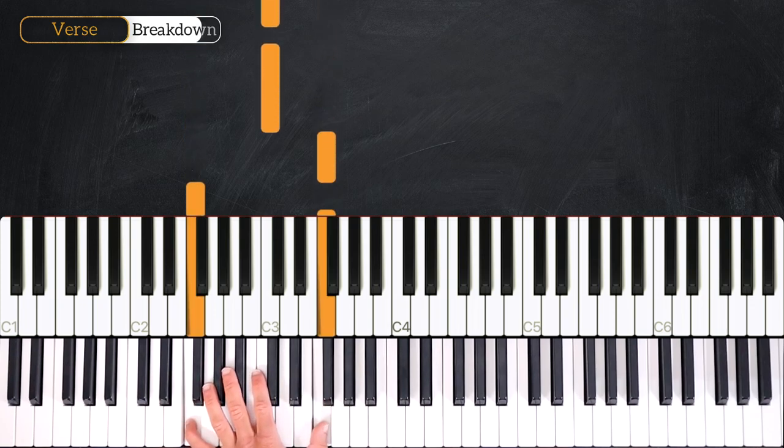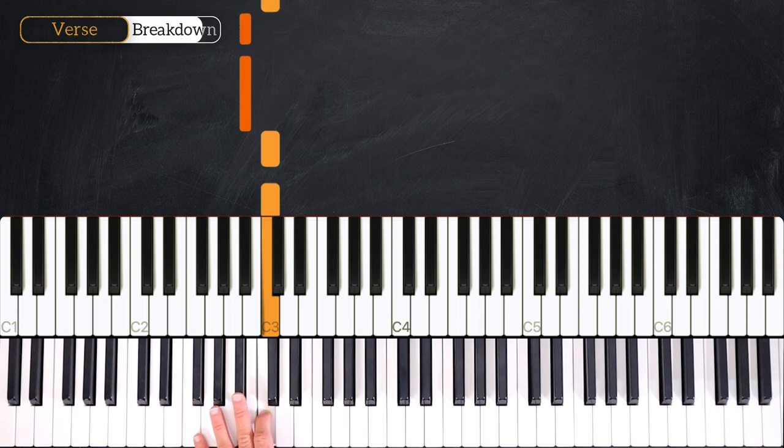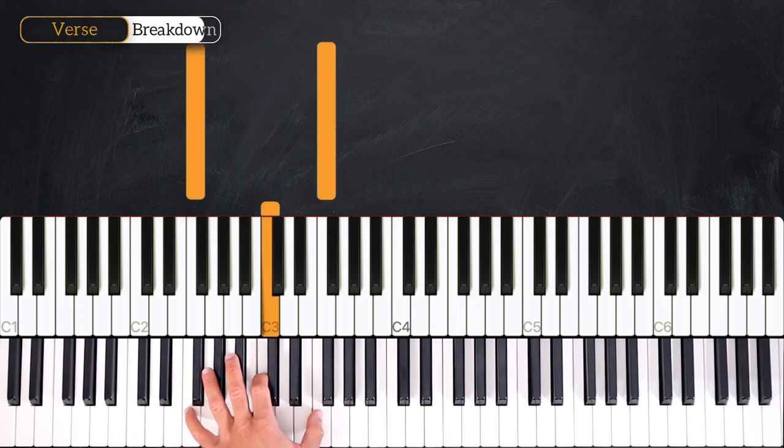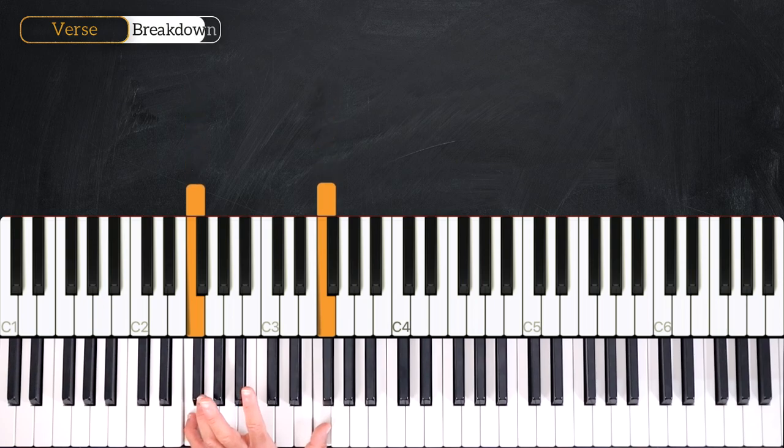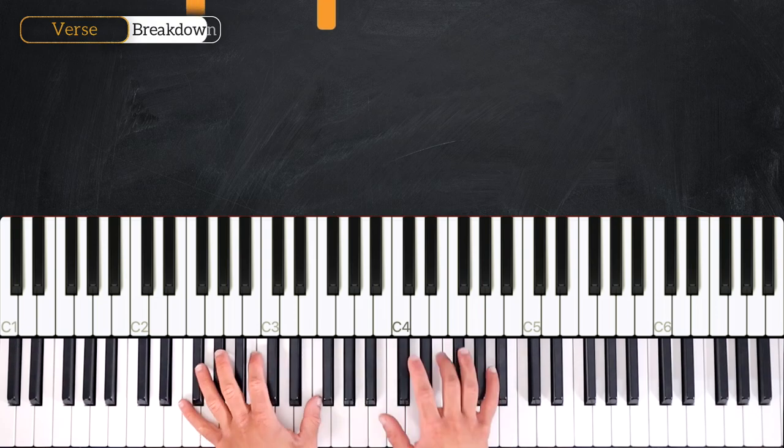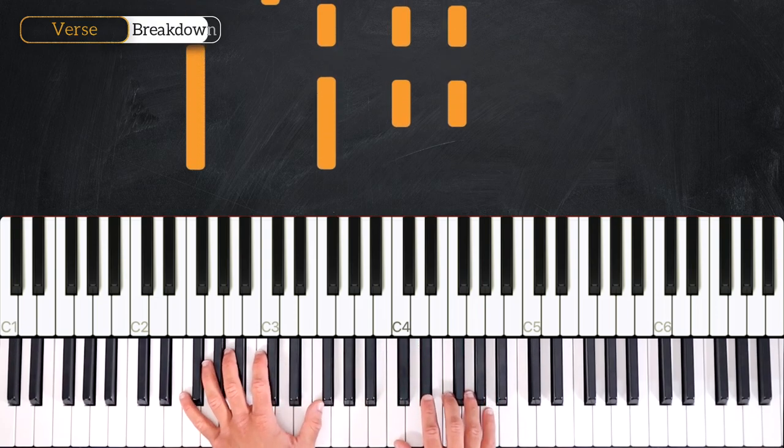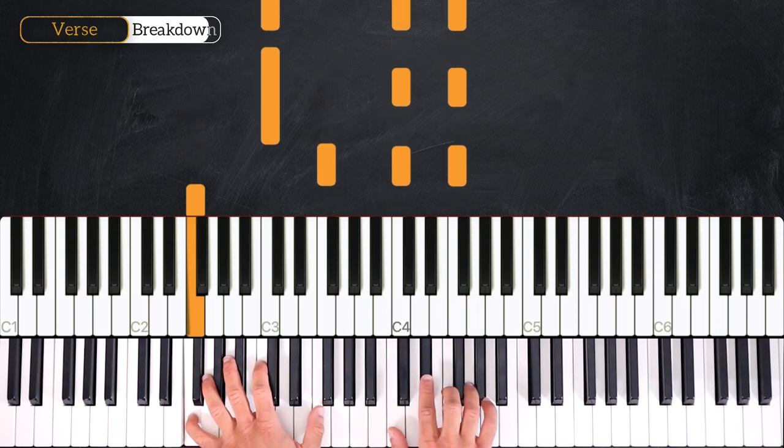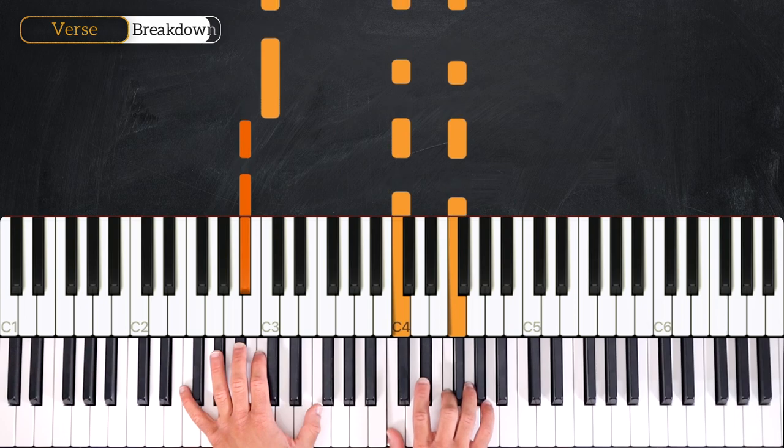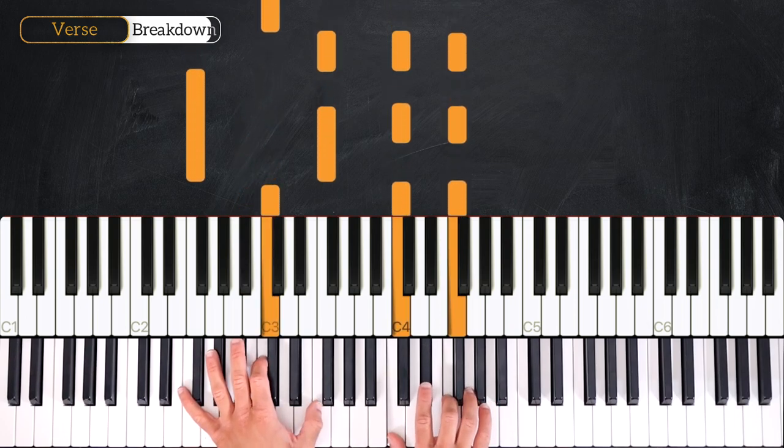F into F, C, C, B, B, B, C back to F, just like that. That's our first bar. We'll repeat it four times. Let's try hands together: three, four and one, two, three, four and one, two, three, four and one, two, three. Second time.